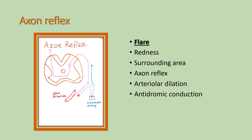The axon reflex produces arteriolar dilatation due to the release of substance P and calcitonin gene-related peptide (CGRP). These produce arteriolar dilatation, which causes redness over the surrounding area of the injured part of the skin. So, the triple response consists of: red reaction, wheal, and flare. This is an important short note from cutaneous circulation.